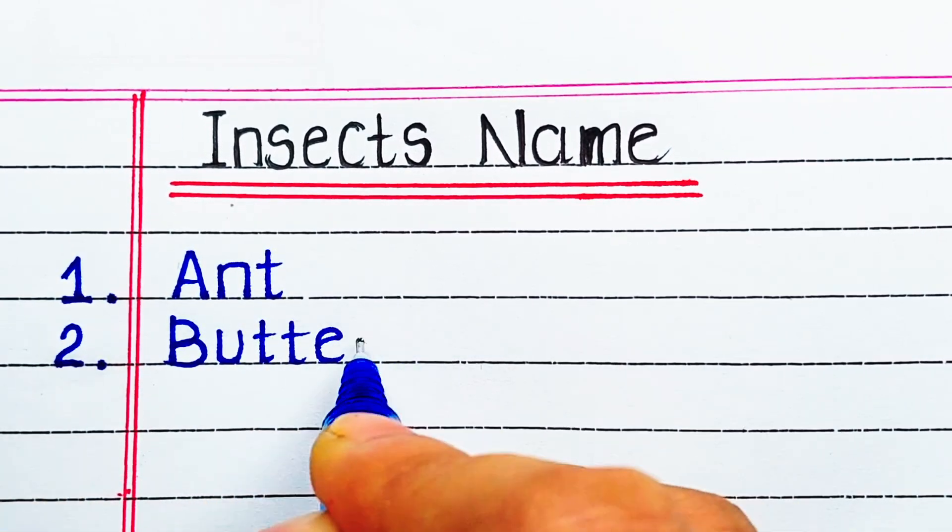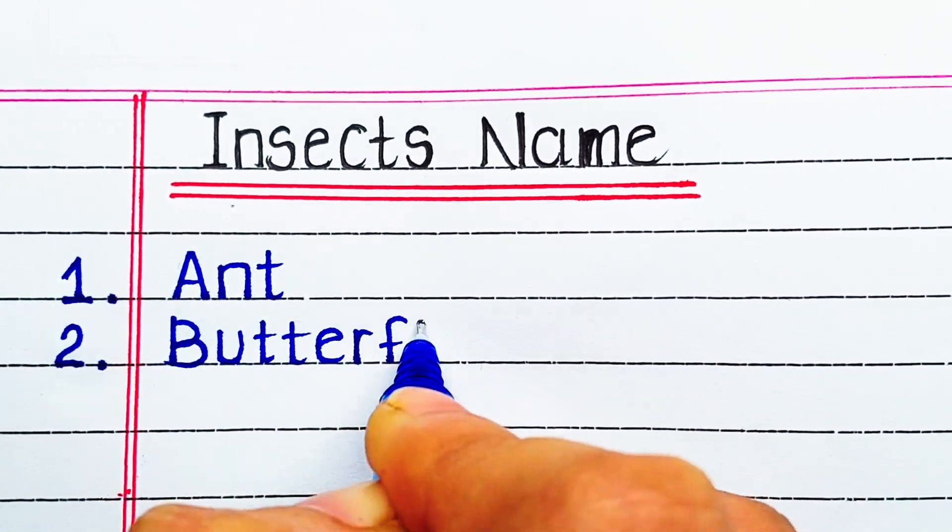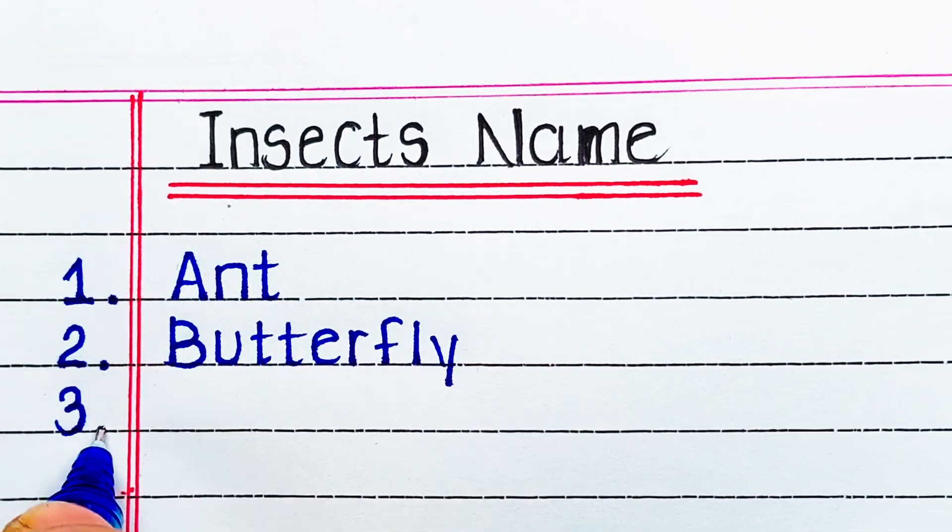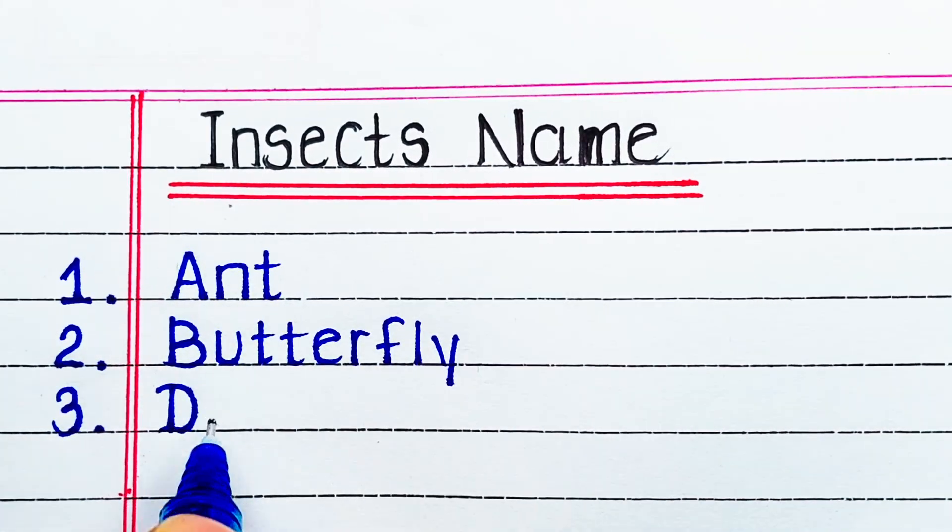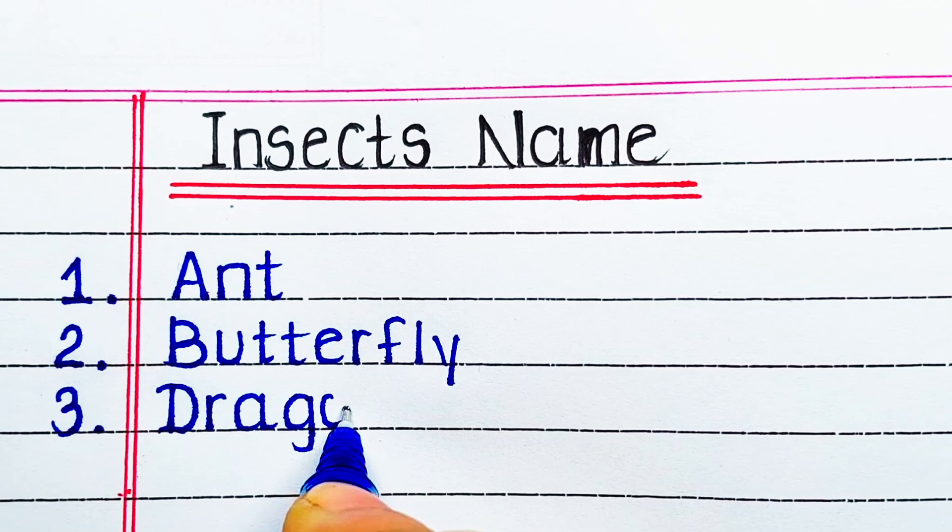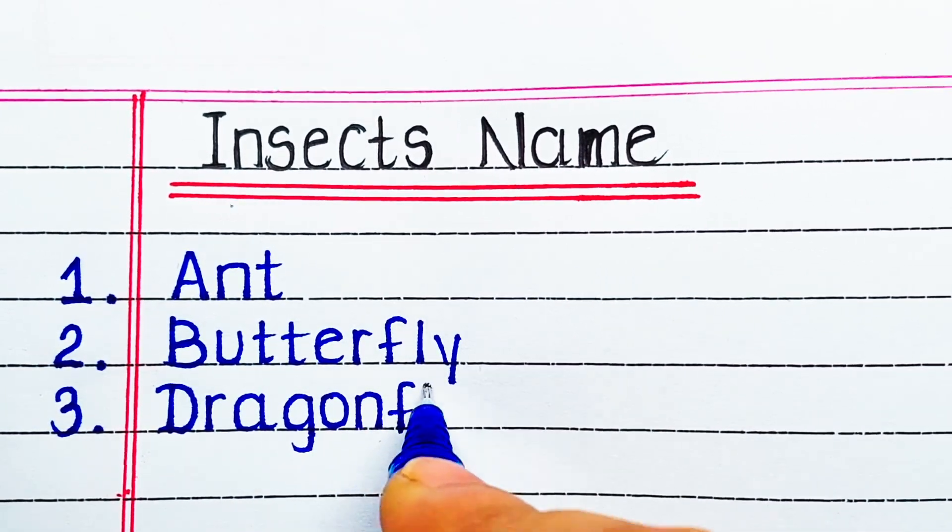First one is ant. Ant. Next is B-U-T-T-E-R-F-L-Y, butterfly. Next is D-R-A-G-O-N-F-L-Y, dragonfly.